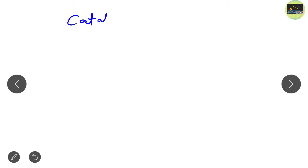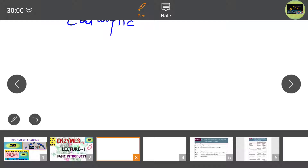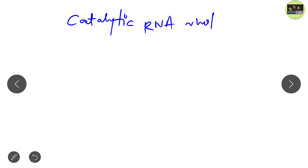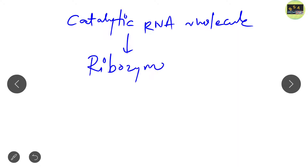Now we discuss the first important property. Many students think that all enzymes are proteins, but that is not the case. Most enzymes are proteins, but not all. The exception is some catalytic RNA molecules — for example, ribozyme. Ribozyme is an RNA enzyme; it is not a protein but it functions as an enzyme. I will teach you ribozyme in detail in upcoming lectures.